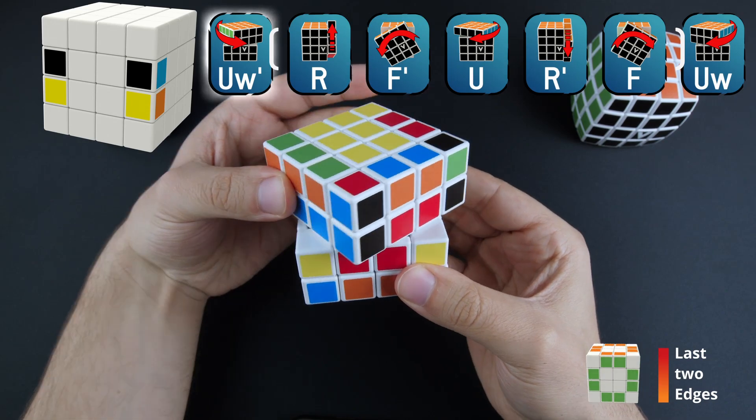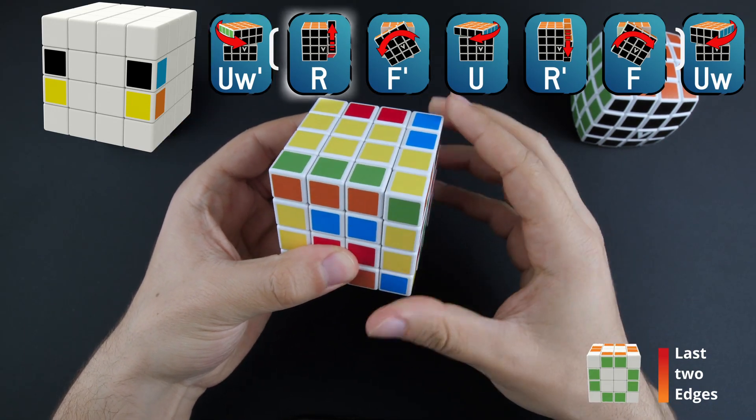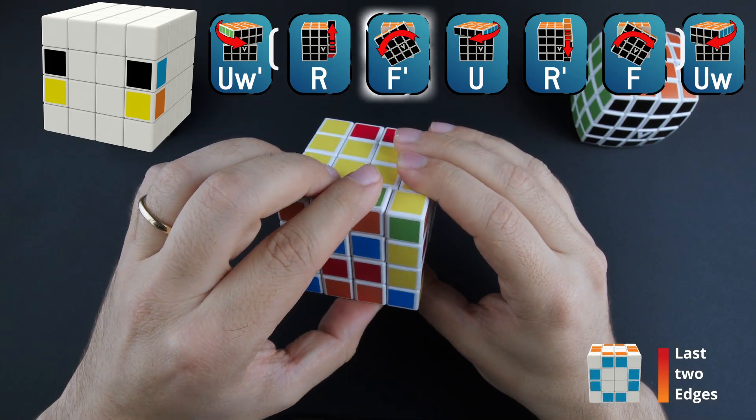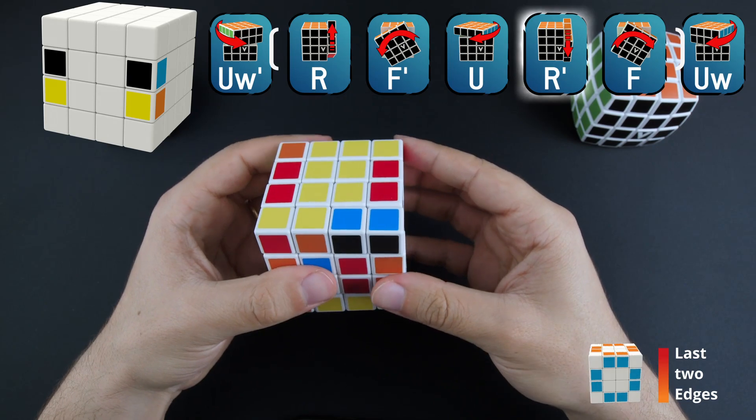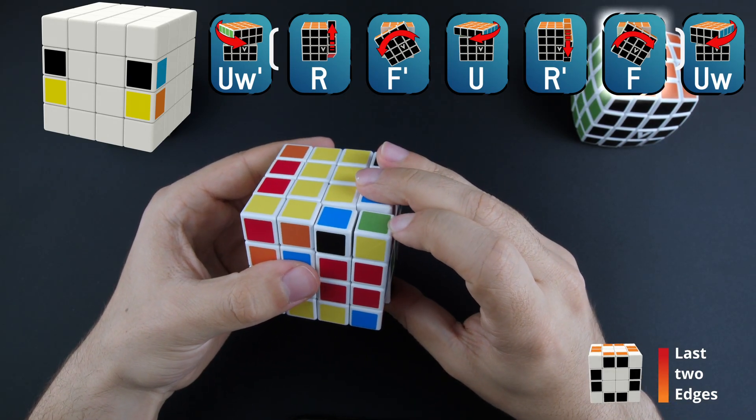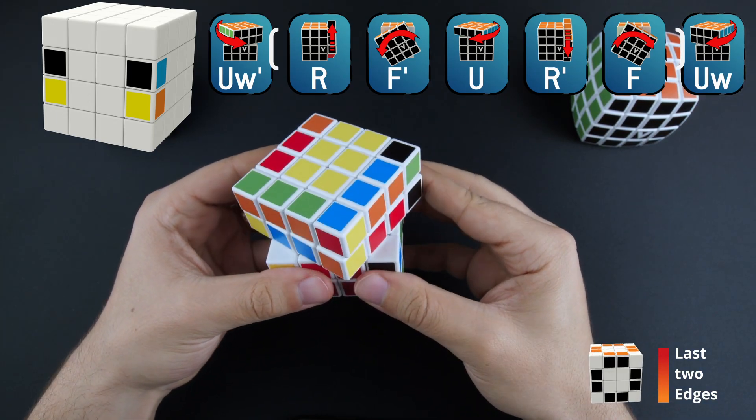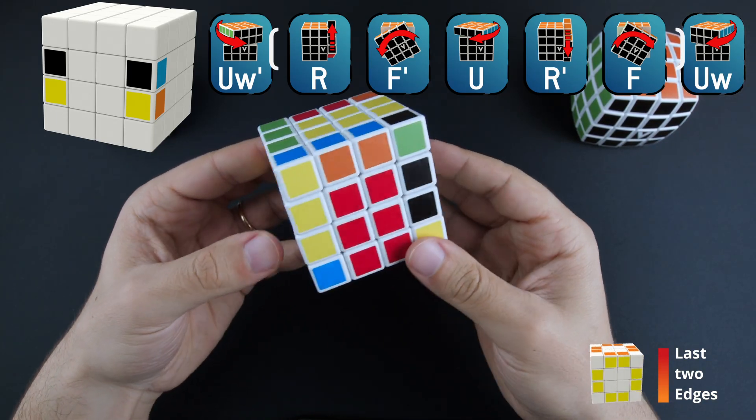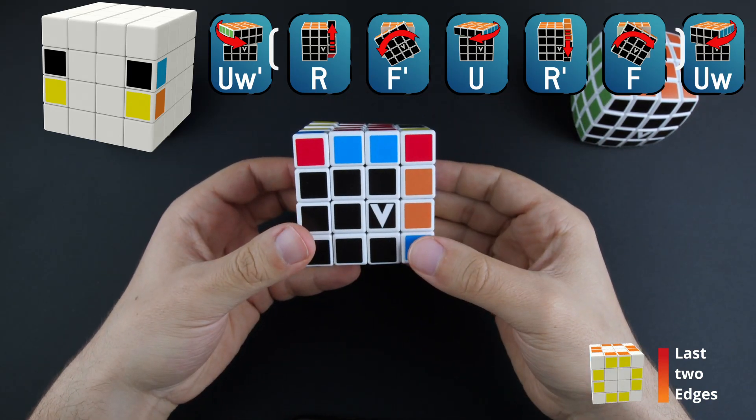UW inverted, R, F inverted, U, R inverted, F, UW. Well done. Now your 4x4 looks just like a 3x3 and we can solve it like one, with only two small exceptions.